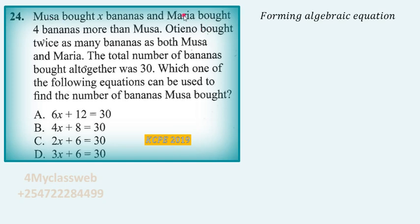In this statement, we have three people: Musa, Maria, and Oteno. Each one of them bought a certain number of bananas. Starting with Musa, he bought x bananas. When we come to Maria, whatever Maria bought is expressed in terms of what Musa bought, because we are told that Maria bought four bananas more than Musa — so Maria bought x plus four bananas.